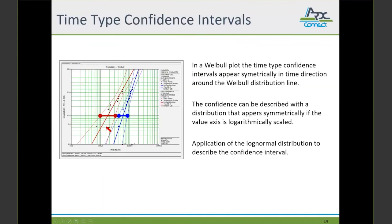What you can see is that the confidence intervals appear symmetrically in horizontal or in time direction around the Weibull line. That means the confidence interval can be described with a distribution that appears symmetrically if the value axis is log scale. So this distribution is a log-normal distribution. So to describe the confidence interval, we only need to find the parameters μ_log and σ_log of the log-normal distribution. And this should not be too complicated. As we have three time values, one, two, and three. And the corresponding risks, 5%, 50%, and 95%.